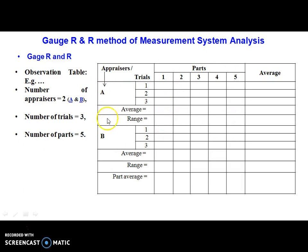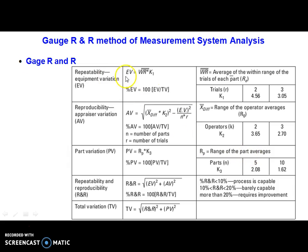Here we have two appraisers — technically referred to as inspectors — appraiser A and appraiser B, using three trials for five parts. Once you start noting down the values, calculate the average and range vertically, and similarly horizontally. We can make use of these formulas.